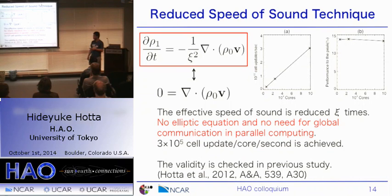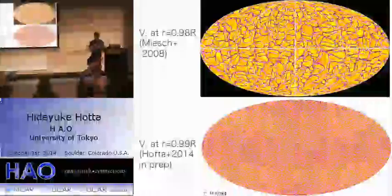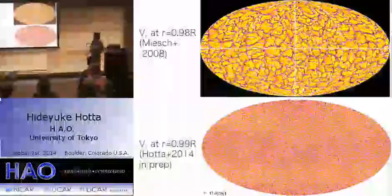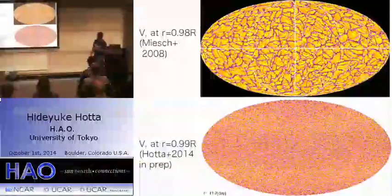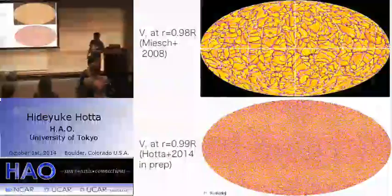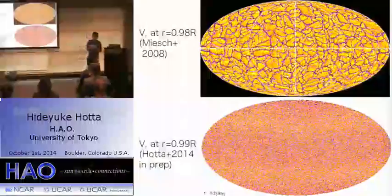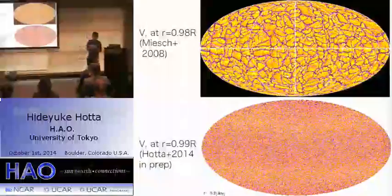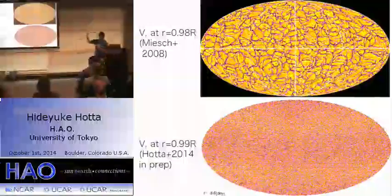The validity of this method is checked in a previous study — please see this paper if you are interested. Using this method we increase resolution. The advantage of this method is we can use the near surface layer with global setting. This is the Mark Mason 2008 paper calculation at 0.98 solar radius near the top boundary. We increase resolution and increase the top boundary. This is the convective structure at 0.99 solar radius. From my PhD thesis, I can reproduce something 10 megameter scale convection with this calculation and reproduce some indication of the near surface layer.